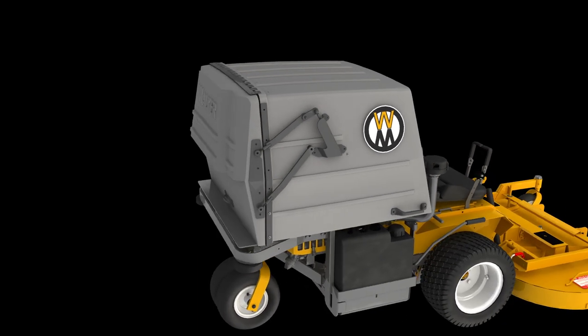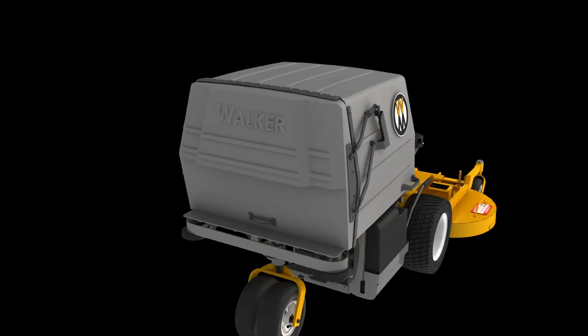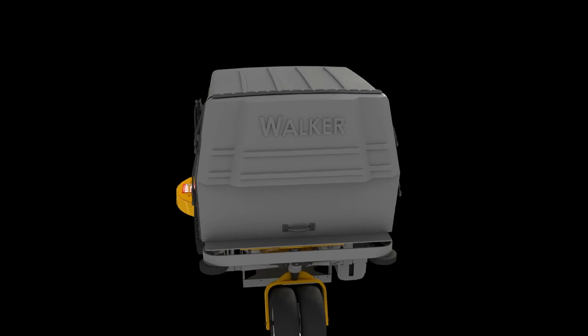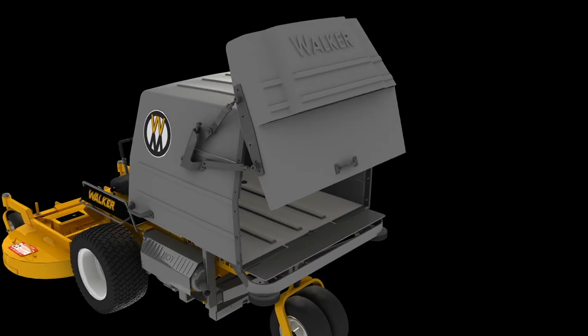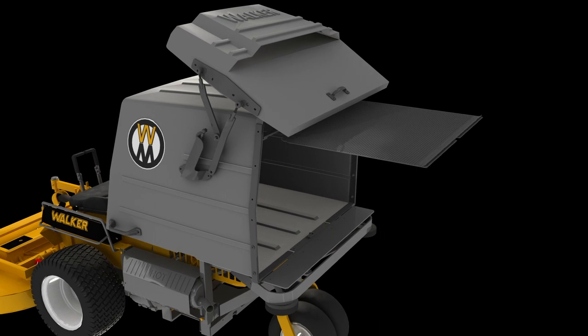The GHS grass catcher is custom molded from high impact polyethylene and comes in both 7 and 10 bushel capacities. That's 8.7 or 12.4 cubic feet of material.